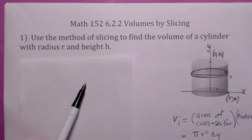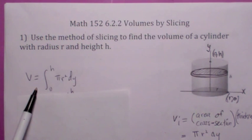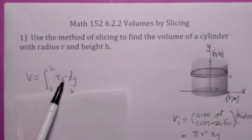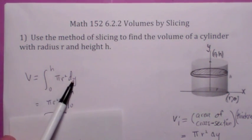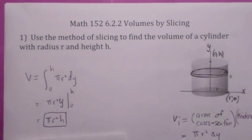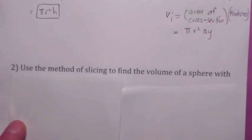When you add up those slabs and take the limit as n goes to infinity, you get the definite integral from 0 to h of πr² dy, which is constant. So when you evaluate the integral with respect to y, you get πr²y. Evaluating that between 0 and h, sure enough you get πr²h — no surprise there.